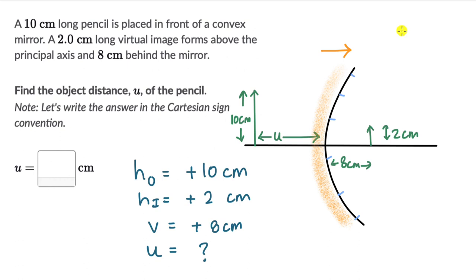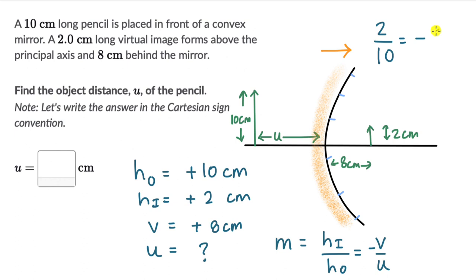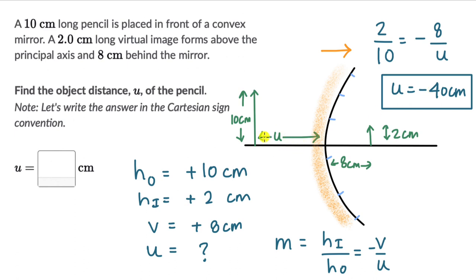Now let's use the magnification formula: magnification equals height of image divided by height of object, which equals minus V divided by U. Height of image is 2, height of object is 10, so 2/10 equals minus 8 divided by U. Working this out, U comes out to be minus 40 cm. The negative sign makes sense because U is on the left-hand side, opposite to the direction of incident light, so it is negative per the Cartesian sign convention.